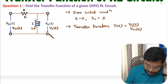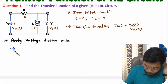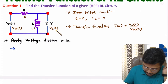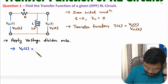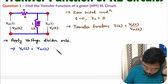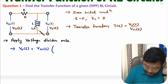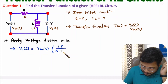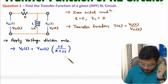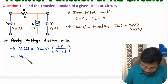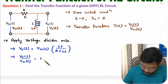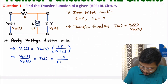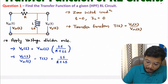To find the transfer function, I will apply the voltage divider rule. Output voltage Vo(s) equals Vin(s) multiplied by the impedance of the inductor Ls, divided by the total impedance R + Ls. Therefore, the transfer function T(s) = Vo(s) / Vin(s) = Ls / (R + Ls). This is the transfer function of the high pass filter RL circuit.